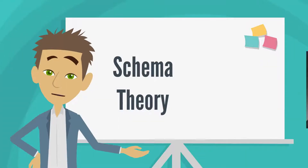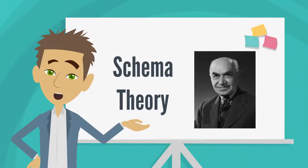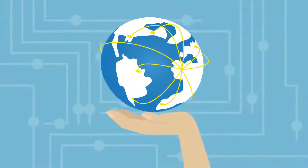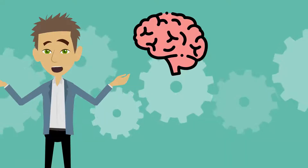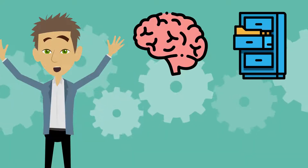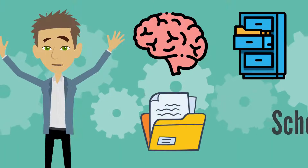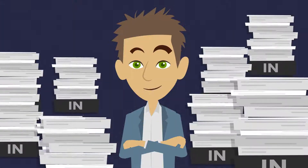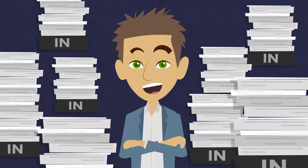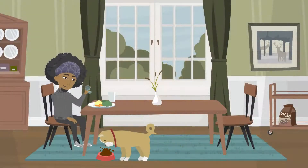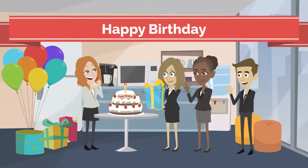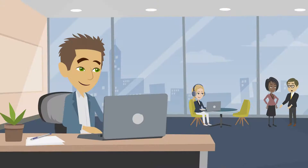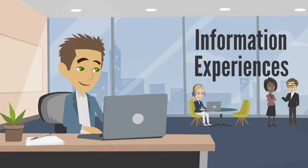Schema theory, introduced by Frederick Bartlett, is like a mental map that helps you understand the world around you. Imagine your brain has a filing cabinet. Each file in this cabinet is a schema. These schemas are like folders full of information on a specific topic, what a dog is, or what usually happens at a birthday party. These schemas help you make sense of new information and experiences.